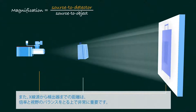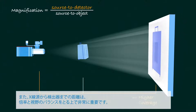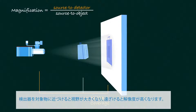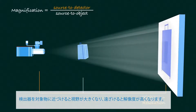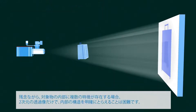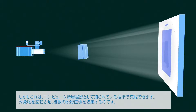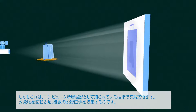The source-to-detector distance also plays a pivotal role in balancing magnification and coverage. Moving the detector closer to the object results in higher coverage, while moving the detector further away yields higher resolution. Unfortunately, if multiple features are present inside the object, the image is hard to decipher. This is overcome with a technique known as computed tomography.